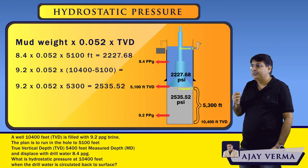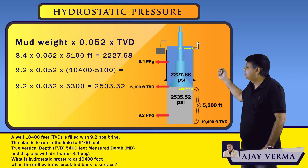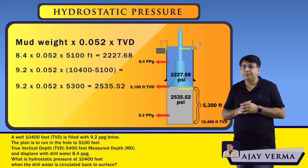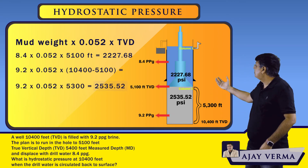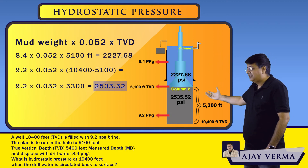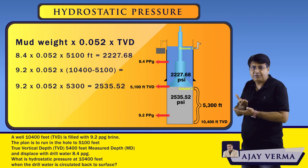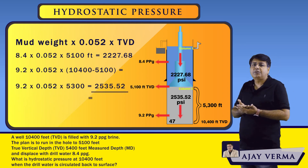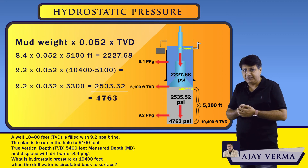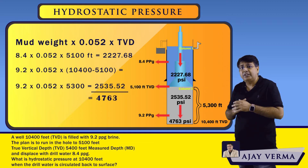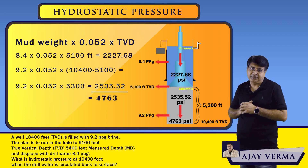The first column hydrostatic pressure created by 8.4 ppg mud is 2,227 psi. The second column hydrostatic head created by 9.2 ppg brine is 2,535 psi. Adding both columns — since both hydrostatic heads act on the bottom — gives a total of 4,763 psi. The total pressure acting downward due to both fluid columns is 4,763 psi.